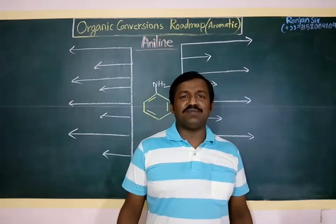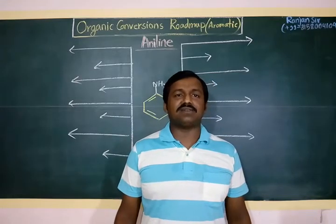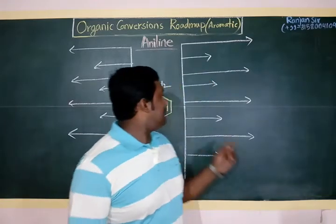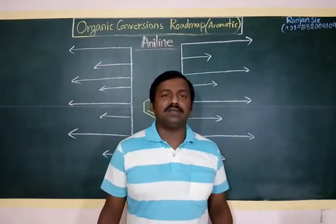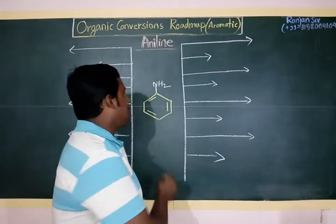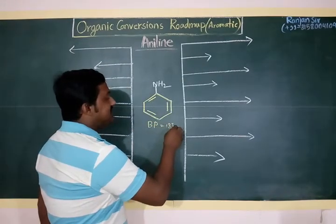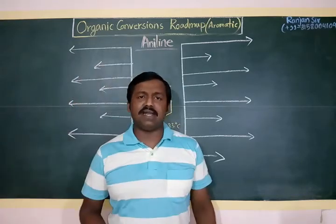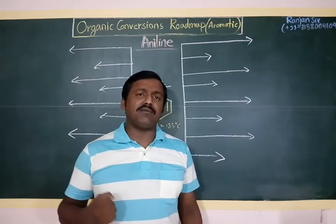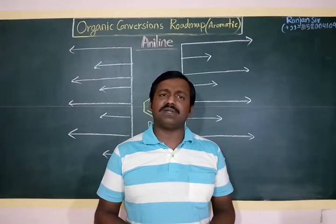Hello students. Now I am going to discuss one of the most important nitrogenous compounds — aniline — and its important reactions. Aniline is naturally found in liquid state, with a boiling point of 183 degrees centigrade. Freshly distilled aniline is colorless, but aniline found in the lab is a bit brownish or oily due to the presence of certain oxidized products of aniline.